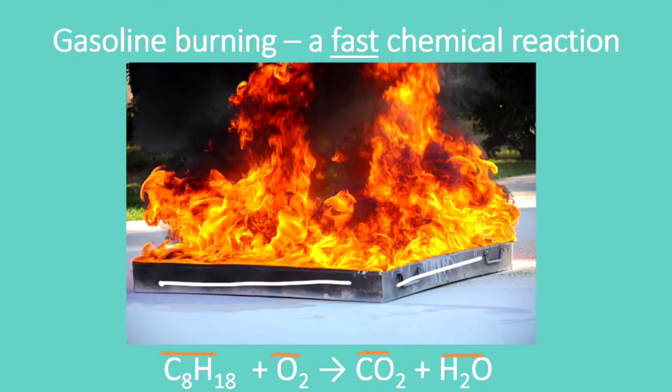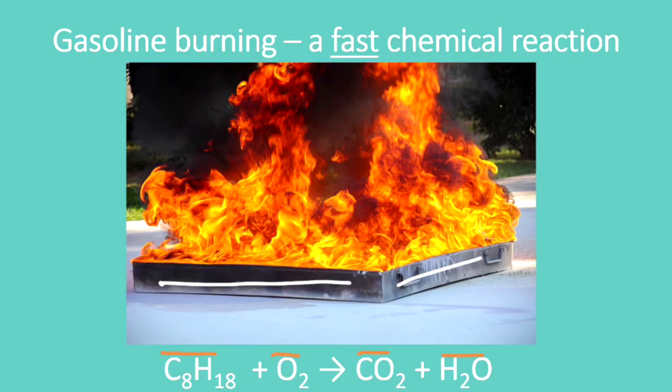Why is that? If we can understand reaction rates, we can understand why gasoline merely burns, but something like TNT explodes. So here is a picture of TNT exploding. It's an even faster chemical reaction than gasoline burning. And it's such a fast chemical reaction that its energy is released all at once, and that's why we see this violent explosion releasing these dust particles all over the place.